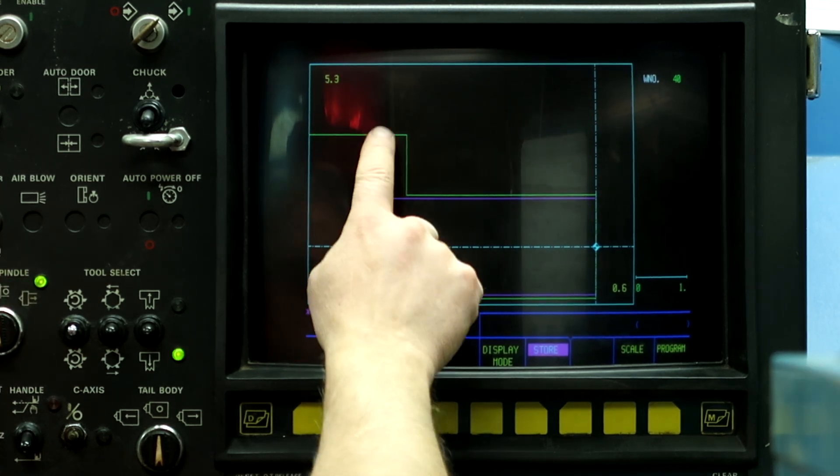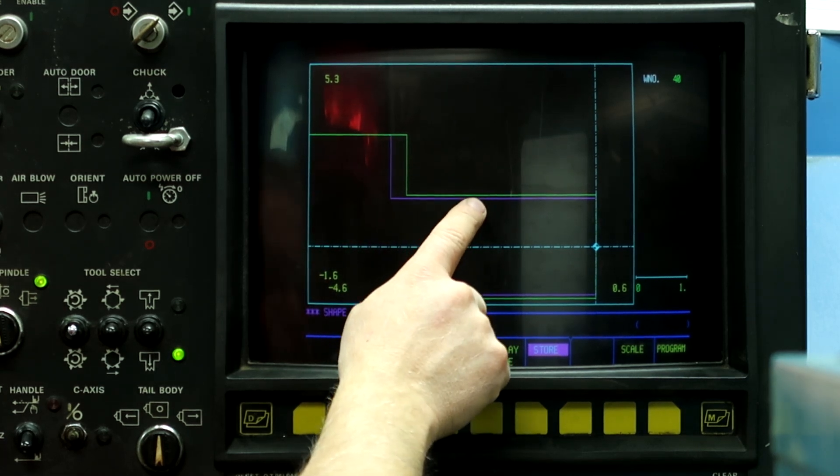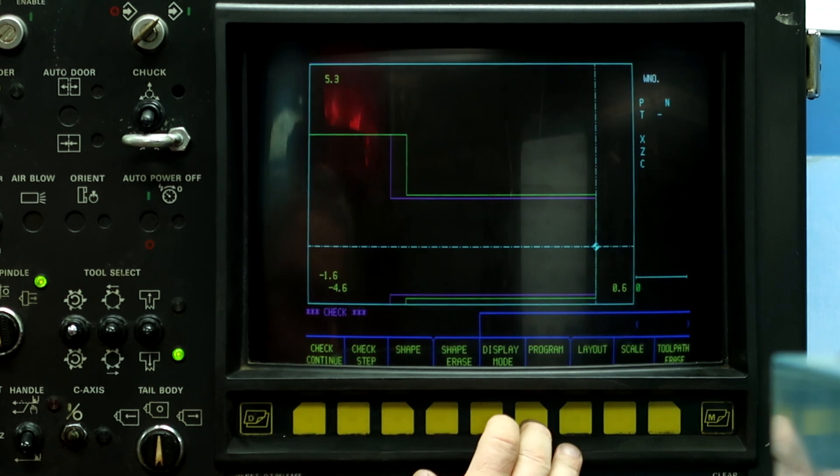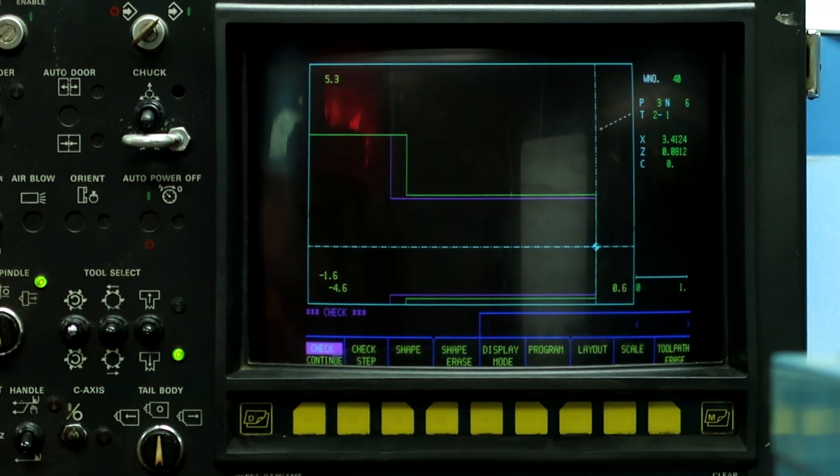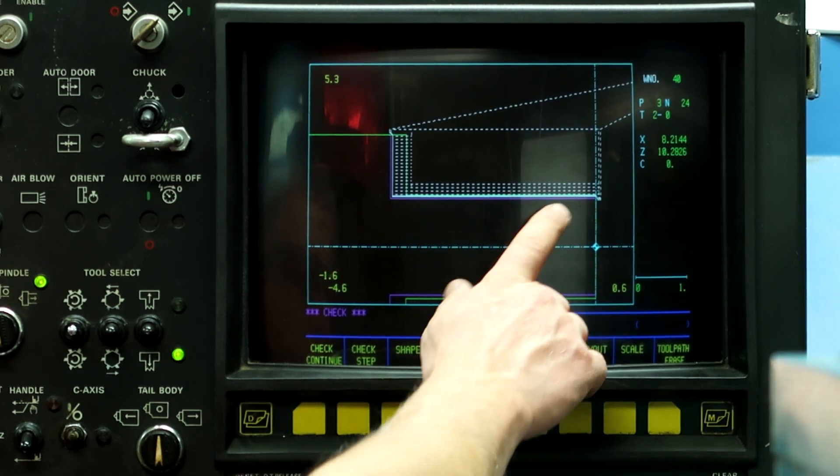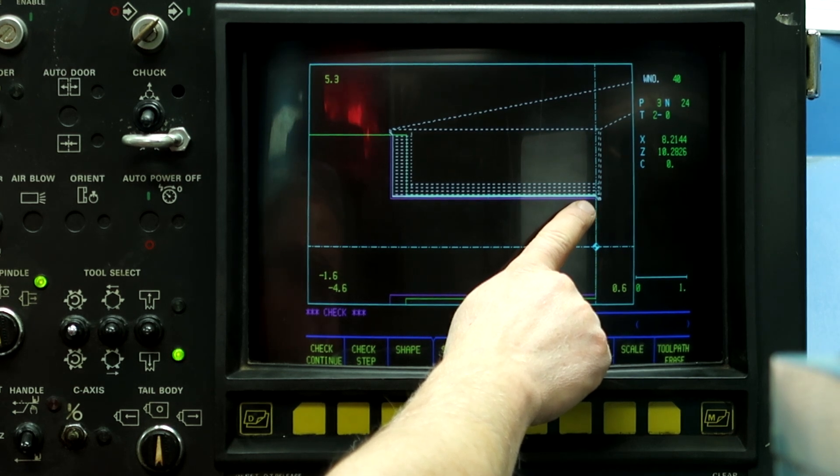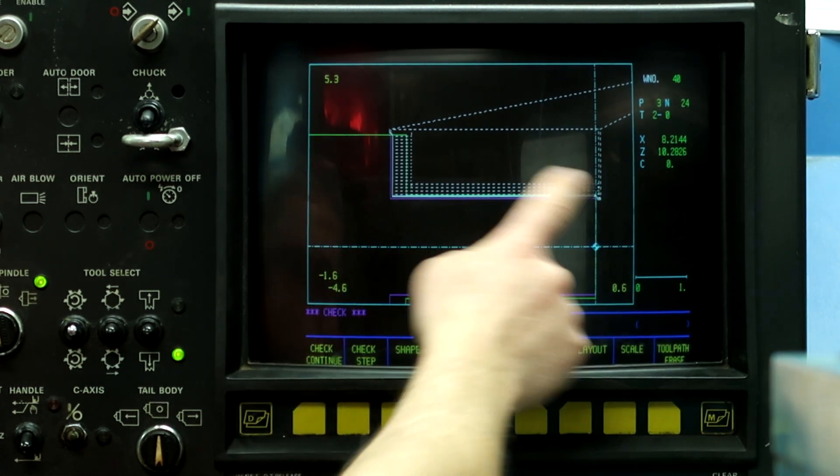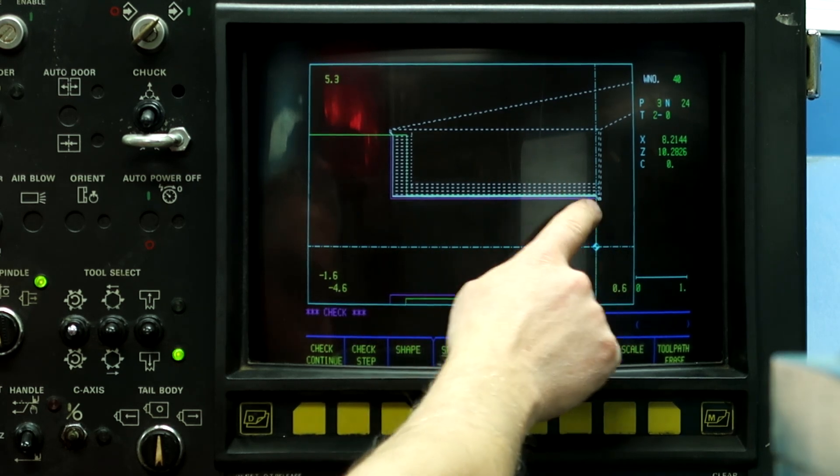Let's go ahead and run the tool path. So it actually took three passes because my depth of cut is so small at 50 thousandths depth of cut, so it's going to take basically two air passes because of the clearance plane and then it's going to cut the stock.